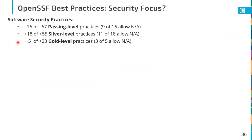Focusing on the security practices themselves: 16 of the 67 passing level practices are specifically for security under the security category, but nine of those 16 you can mark as not applicable. For my Tribits Core project, almost all of those were not applicable because a lot have to do with cryptography and authentication — things that most software doesn't deal with — really just security-critical software. So 18 of the additional silver-level practices are in the area of software security, but 11 of those can be marked as not applicable, and five of the additional 23 gold-level practices are security-related with three of those five also markable as not applicable.